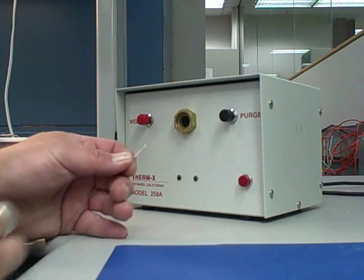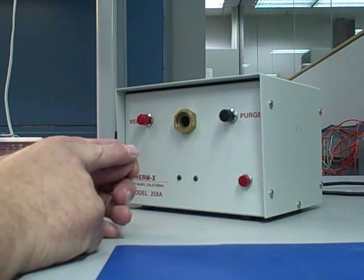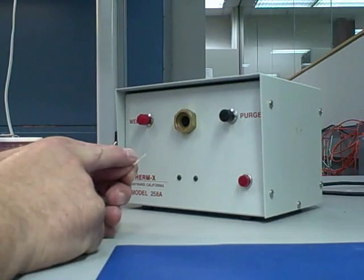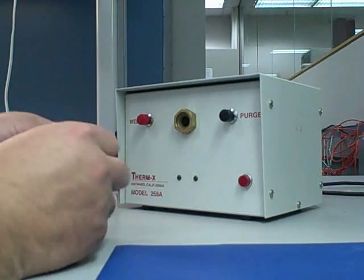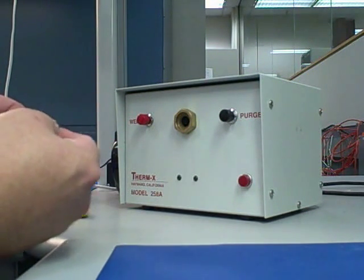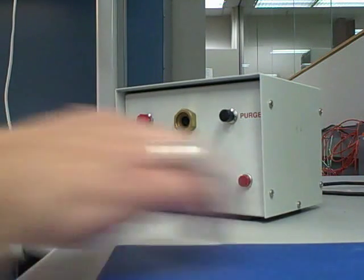So once you get done stripping it, you have a piece of wire with two bare wires, like one's copper, one constantine, and then you want to put it into the wire holder.